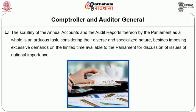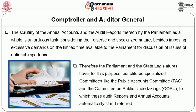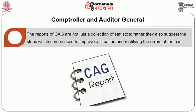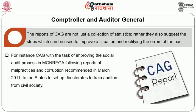As for what action is taken on audit reports, the scrutiny of annual accounts and audit reports by Parliament as a whole is an arduous task given their diverse and specialized nature and the excessive demands on Parliament's limited time. Therefore, Parliament and state legislatures have constituted specialized committees like the Public Accounts Committee and the Committee on Public Undertakings to which these audit reports and annual accounts automatically stand referred. The reports of the CAG are not just a collection of statistics but also suggest steps to improve situations and rectify errors. For instance, following reports of malpractices and corruption in MG NAREGA, the CAG recommended in March 2011 to the states to set up directorates to train auditors from civil society, and that a nominee of the government auditor would be present in social audits that Gram Sabhas would conduct twice a year.